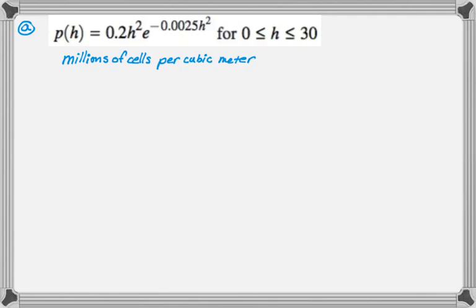But the first question is to find P prime of 25. That's definitely a calculator question. So I just grabbed a calculator and evaluated it. I got P prime of 25 is approximately negative 1.179.